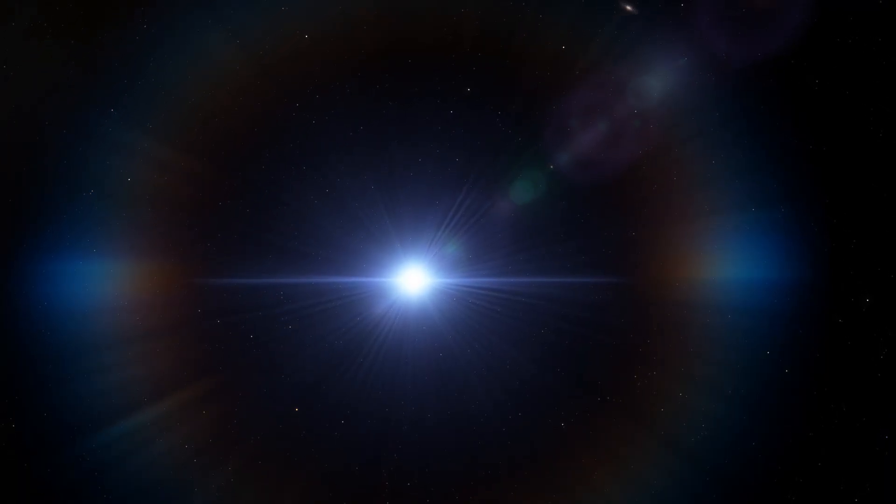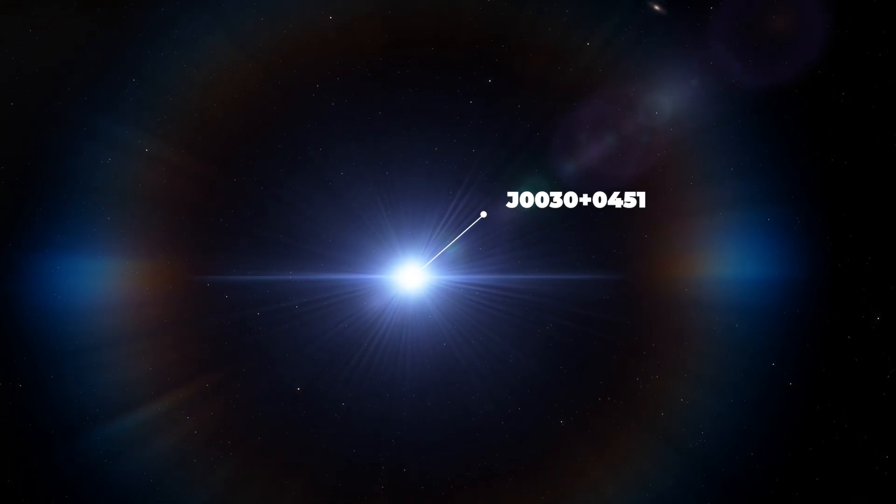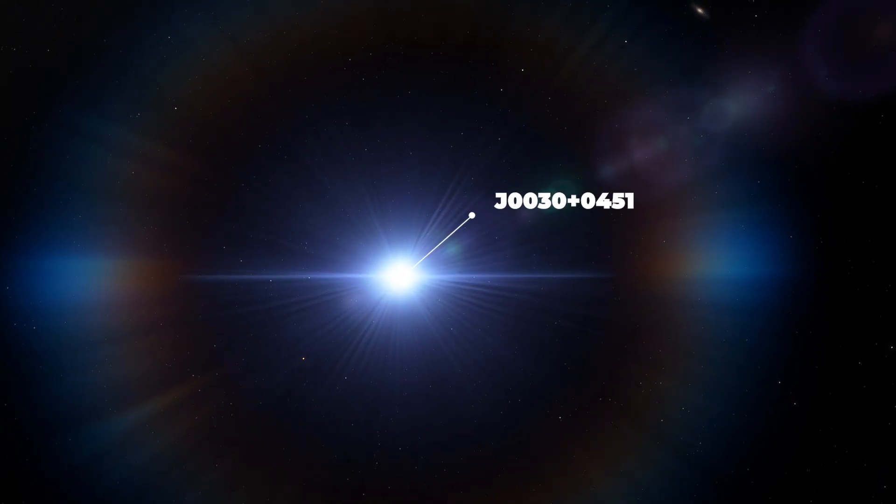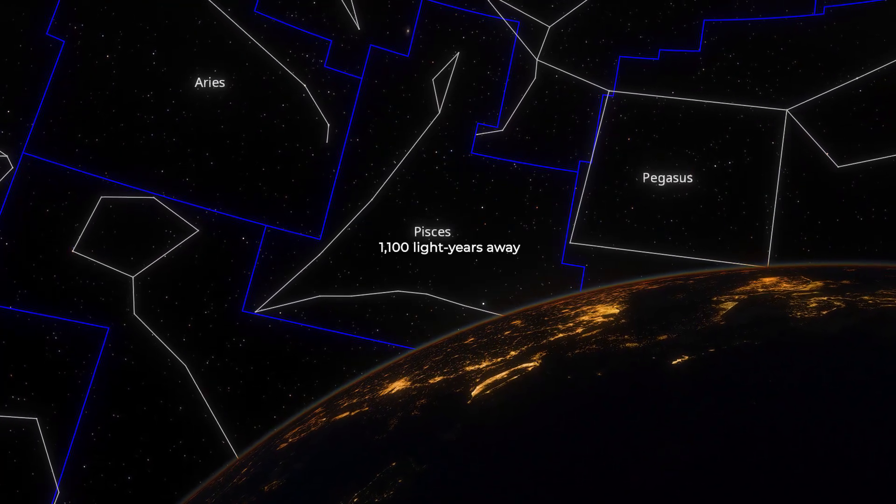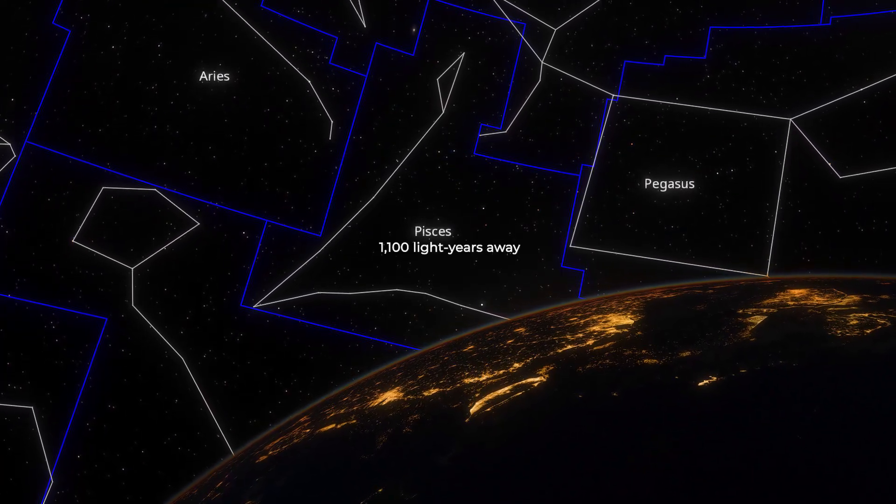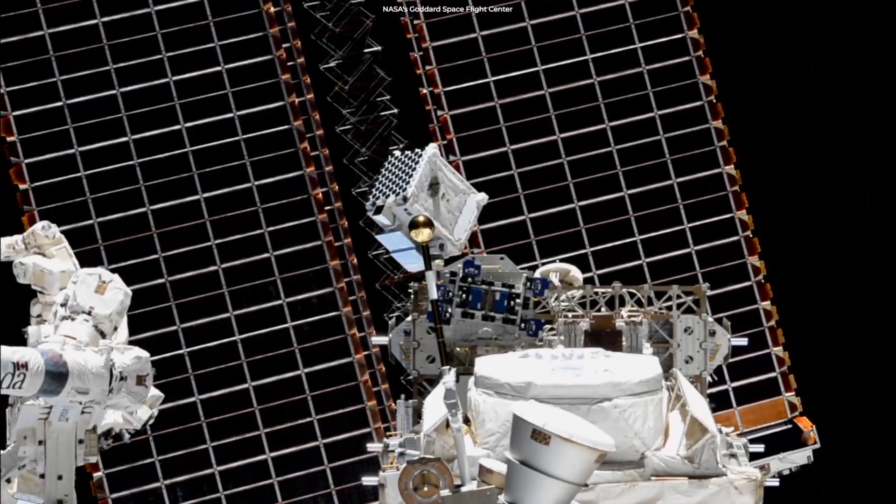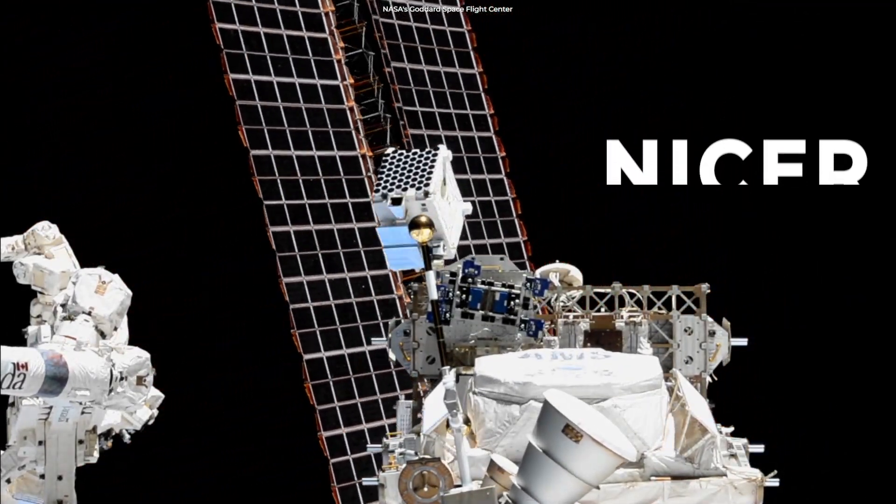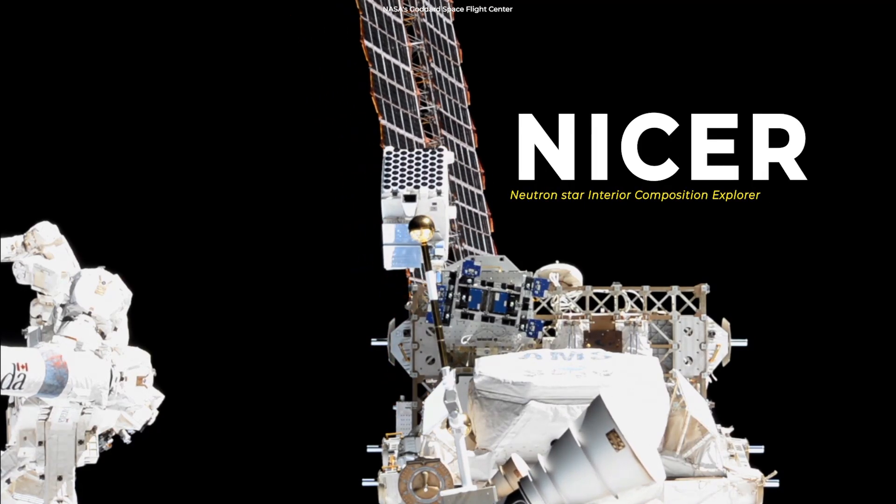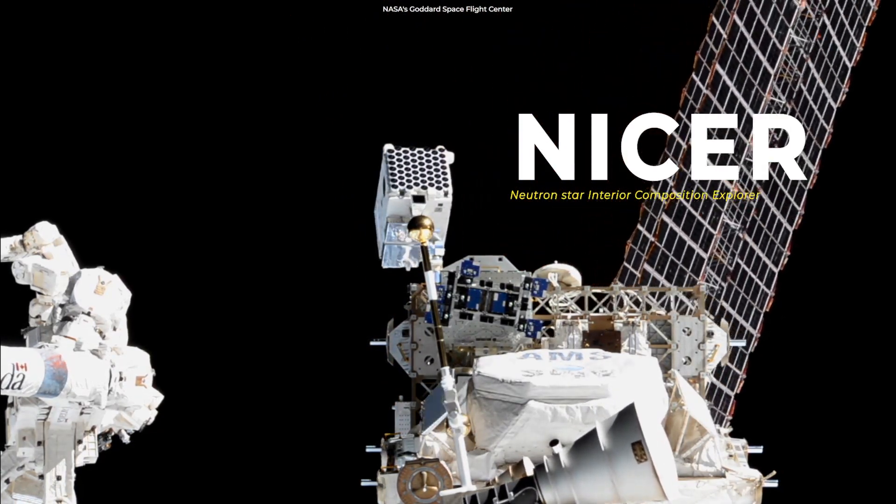Both teams examined X-ray light from the pulsar known as J0030-0451, which lies about 1,100 light-years away in the constellation Pisces. They detected X-rays coming from the pulsar using NASA's Neutron Star Interior Composition Explorer, NICER for short.